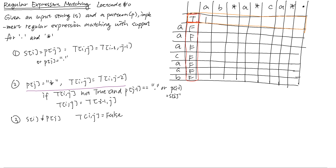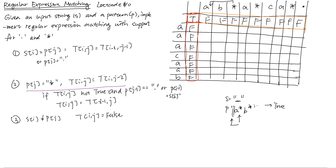For the first row, regular letters should be false. But for a star, we look two positions beforehand — if that entry is false it's false, if true it's true. The reason: when we have an empty string but a pattern like 'A*B*', it returns true because we can use star to represent zero occurrences. So when we see star, we look two positions before and if that's true, we match the empty string, making it true.